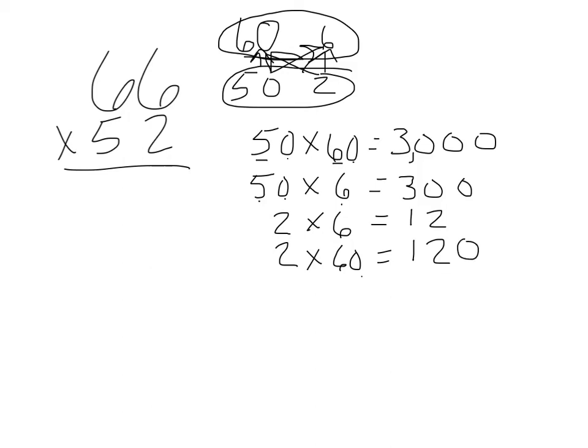Now I have to add the products, so I need to line them up. And I would line up, I'll just do 12 plus 120 plus 300 plus 3,000.